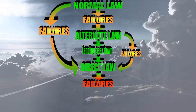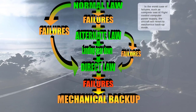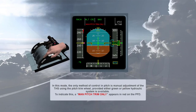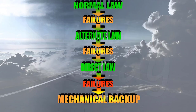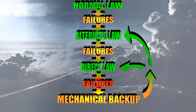In the worst case of failures, such as complete loss of flight control computer power supply, the aircraft will revert to mechanical backup mode. In this mode, the only method of control in pitch is manual adjustment of the trimmable horizontal stabilizer using the pitch trim wheel, provided either the green or yellow hydraulic system is available. A 'Manual Pitch Trim Only' message appears in red on the PFD. Lateral control is achieved using the rudder pedals and their mechanical linkage to the rudder, provided at least one hydraulic system is available. In most cases, by resetting the flight control computers, you will be able to recover from mechanical backup to either alternate or direct law, depending on the type of failure.